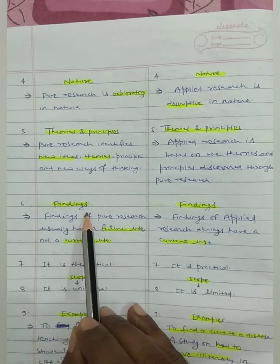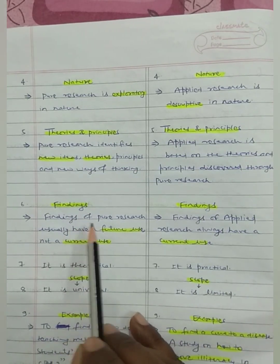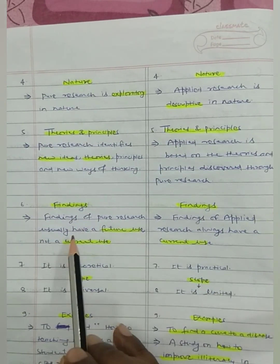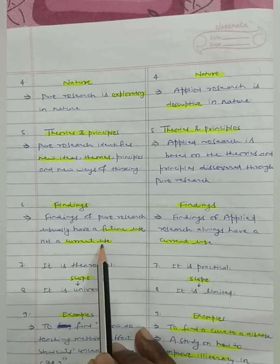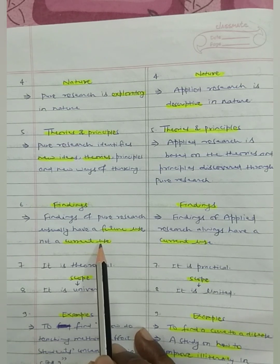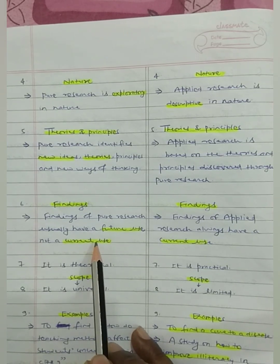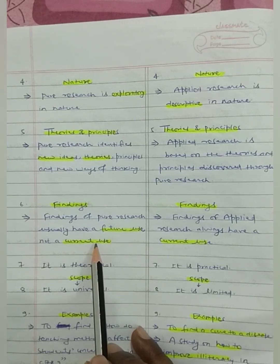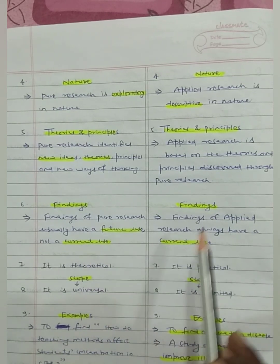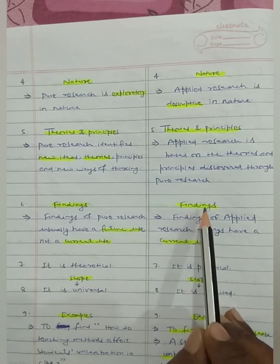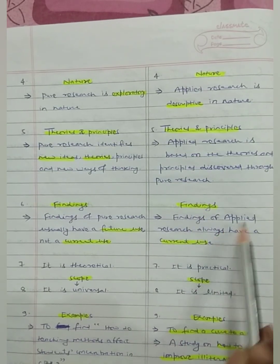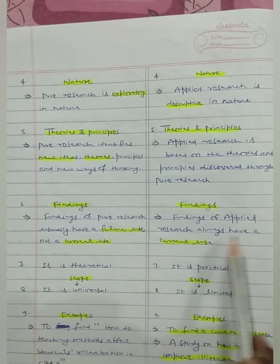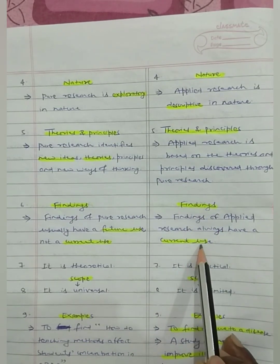Number six: findings. Findings of pure research usually have a future use, not a current use — that means we cannot use this research in current time. Whereas findings of applied research always have a current use.